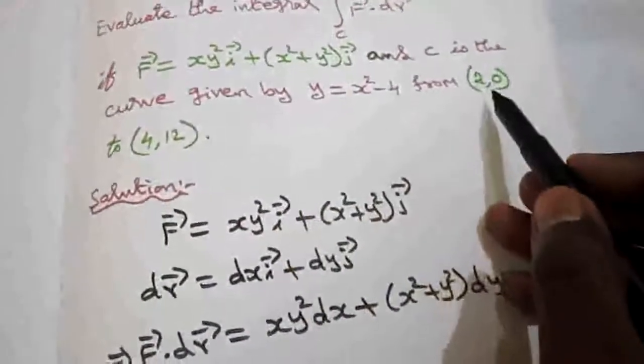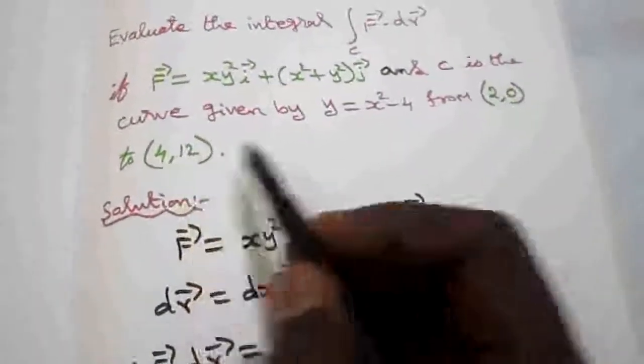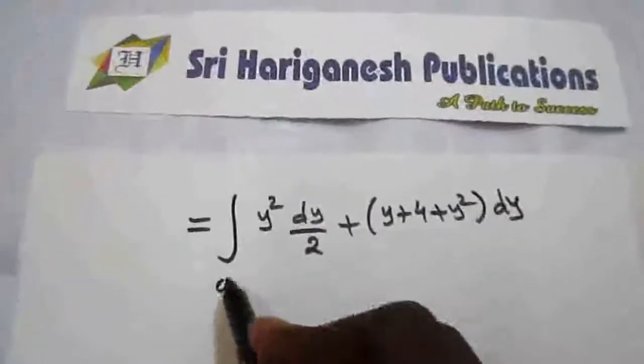Here the limit for y is 0 to 12. Because in the first point, y value is 0. In the second point, y value is 12. So limit for y is 0 to 12.